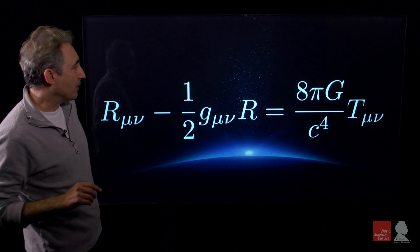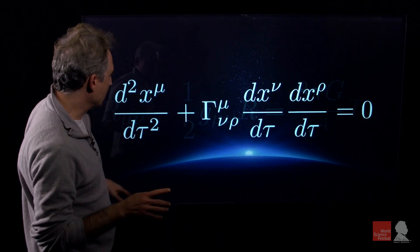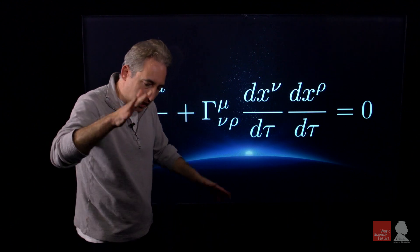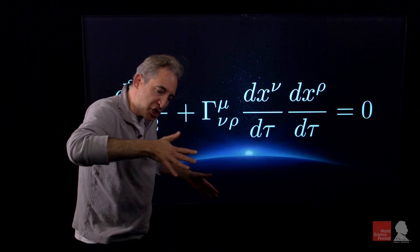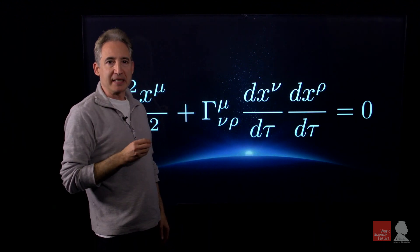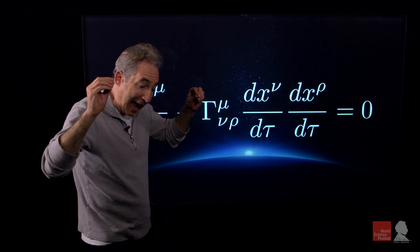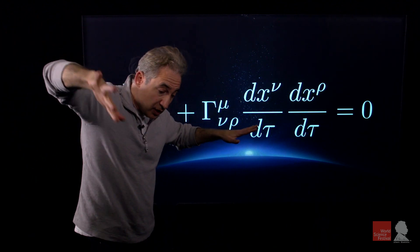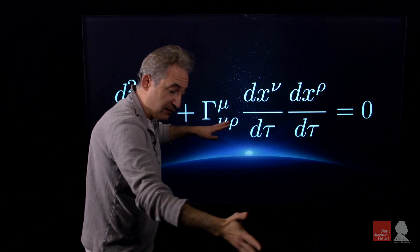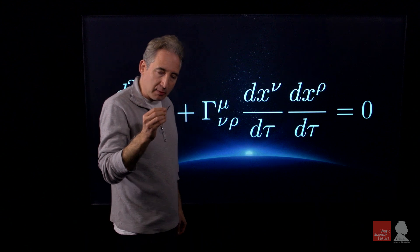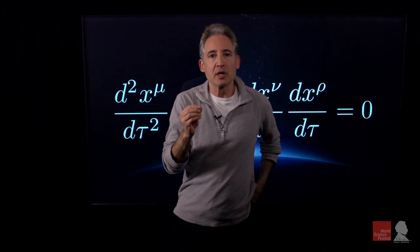And when you supplement that with a little equation over here, that describes what are known as geodesics. Roughly speaking, the shortest possible trajectory through a warped region of space and time. These equations together allow you to determine how an object will move through a curved environment. In essence, Einstein's version of how an object moves under the force of gravity.